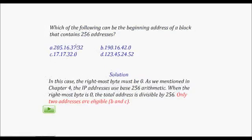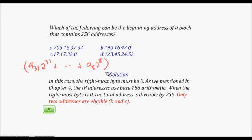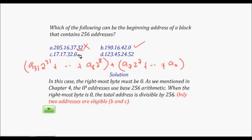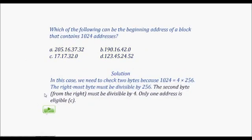Next question: which of the following can be the beginning address of a block containing 256 addresses? Since 256 = 2^8, we only need to check whether the last byte (last 8 bits) is zero. Checking the options: 32 is not divisible by 256; 0 is divisible; 0 is divisible; and the option with 0 is also valid. The answers are the two addresses whose last byte is 0, identified as options B and C.